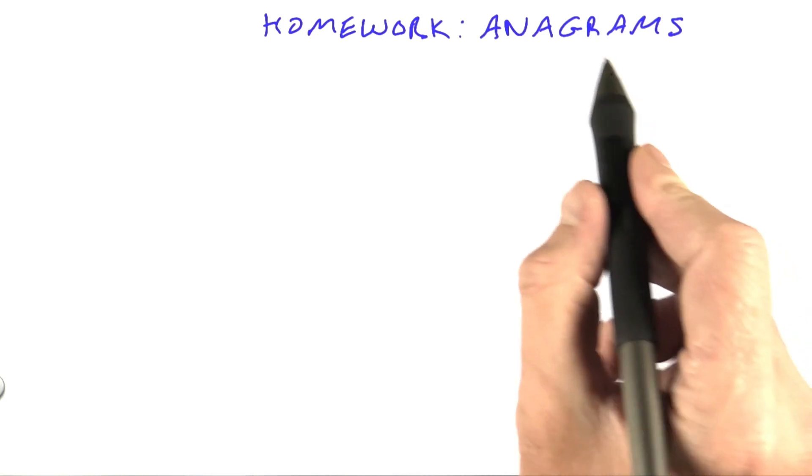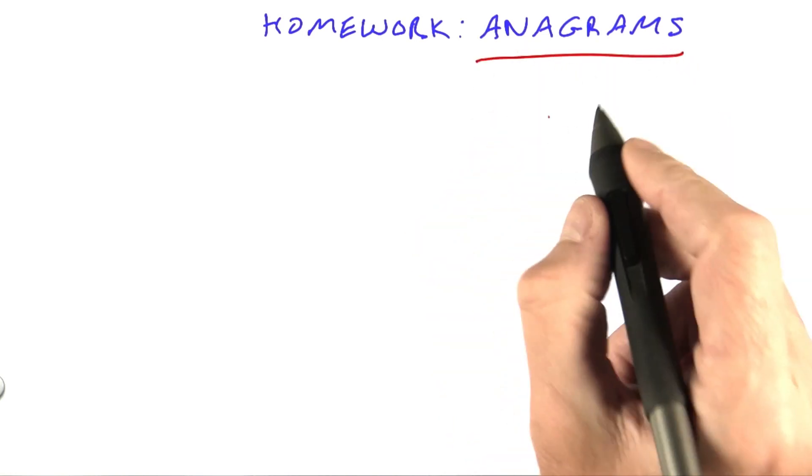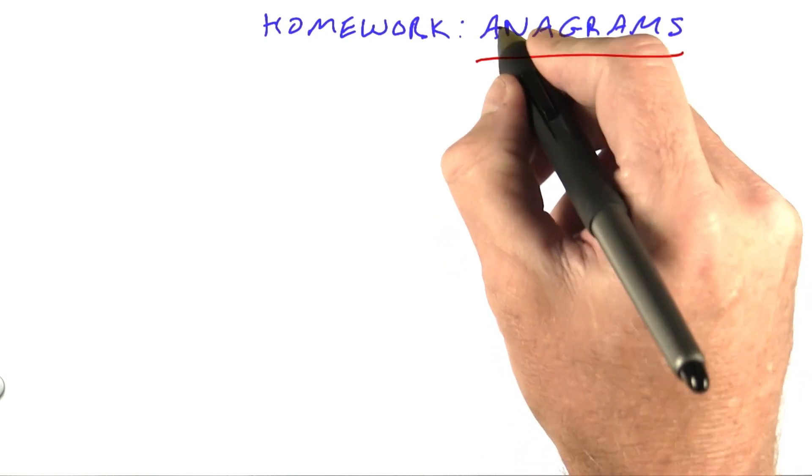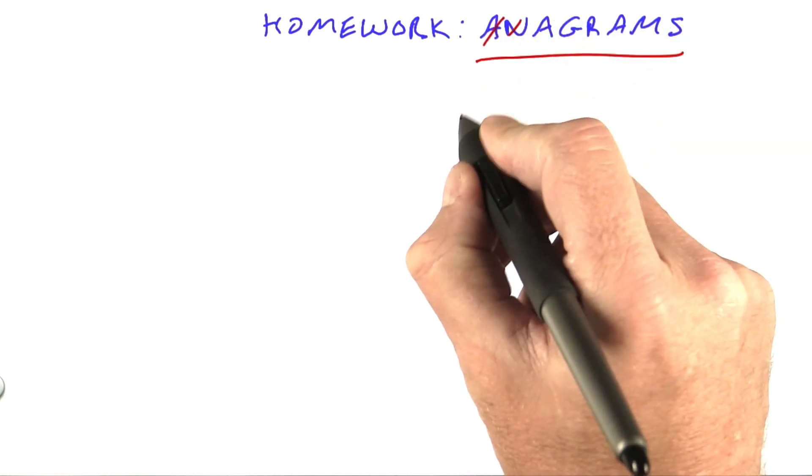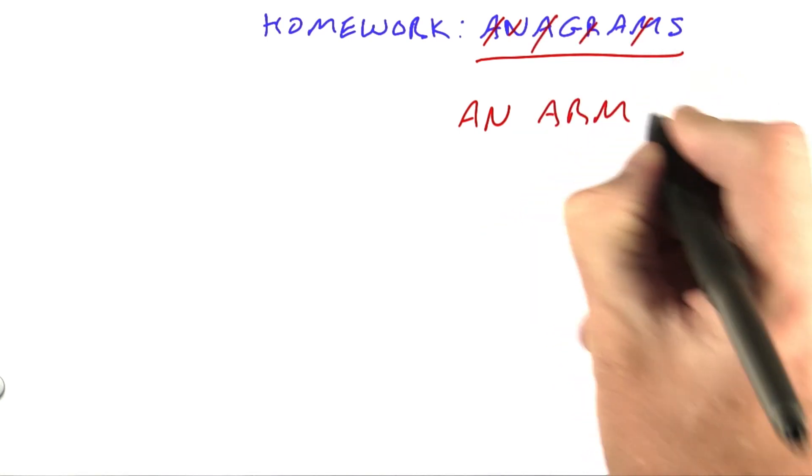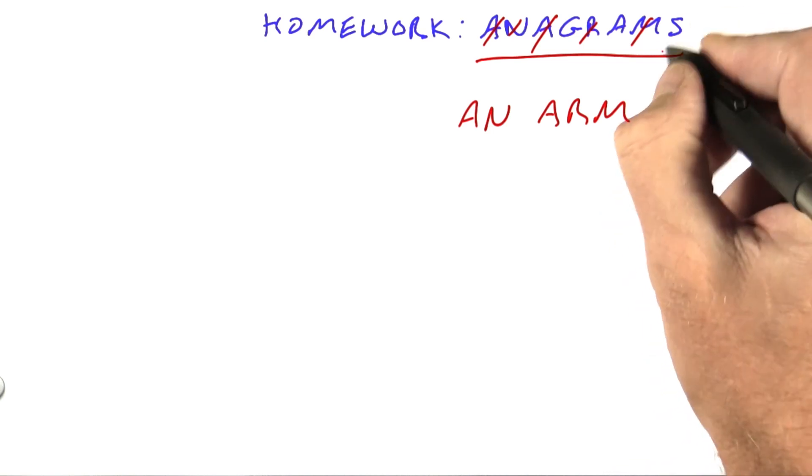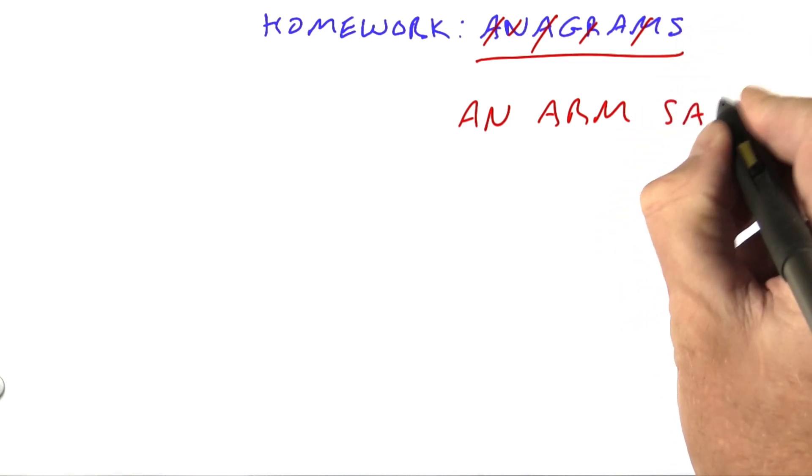For example, an anagram of the phrase 'anagrams' could be - we start pulling out letters and we could say 'an' and then maybe 'arm' and then we're left with 'gas', or we could write that 'sag'.